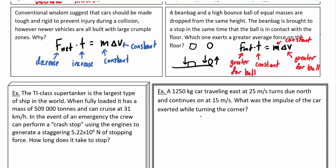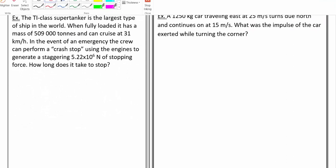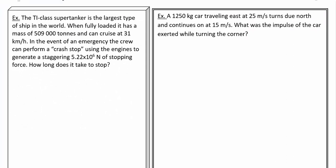Alright, let's look at a couple of calculations. So, in this example here we've got a TI class supertanker. So, these are some of the biggest ships on the planet. When it's fully loaded it has a mass of 509,000 tons. So, that's 509 million kilograms. And it's going to cruise at about 31 kilometers an hour. If the crew needs to stop as quickly as possible they perform a crash stop and they basically spin the engines backwards and try to generate as much reverse thrust as they can to stop it. And they can actually generate 5.22 million newtons of stopping force. So, the question is how long is this ship going to take to stop at that, given that force. We know that F_net times time is equal to M times Δv. So, solving for time that's just M Δv divided by our net force.